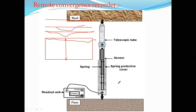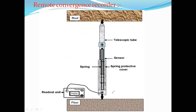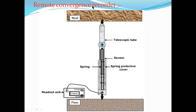The remote convergence recorder consists of a telescopic arrangement — two tubes where one moves inside another — anchored at the roof and the other end anchored into the floor. The inner telescopic tube is attached to the outer one by means of a sensor using a spring. The spring has a stiffness constant, and in case of deformation, there will be a force pressing the inner tube inside.